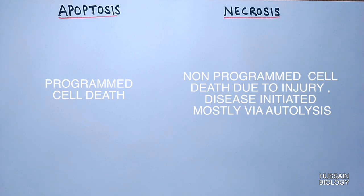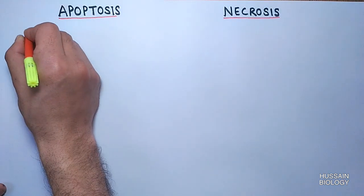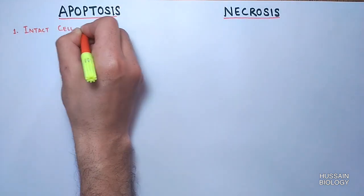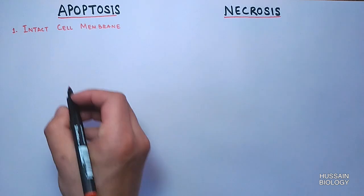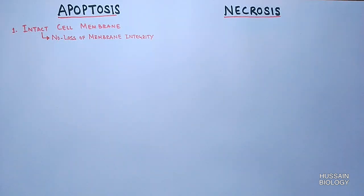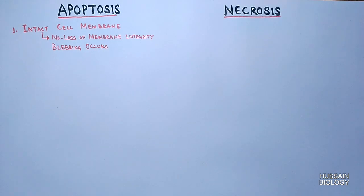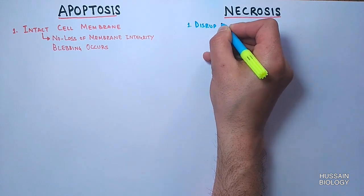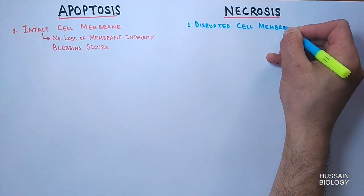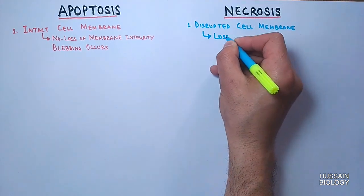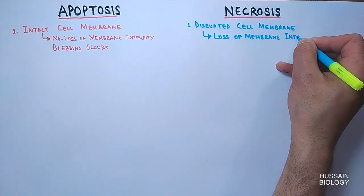In apoptosis, the cell membrane remains intact during the process, although blebbing occurs. In the case of necrosis, the cell membrane is completely disrupted and there is a loss of membrane integrity.